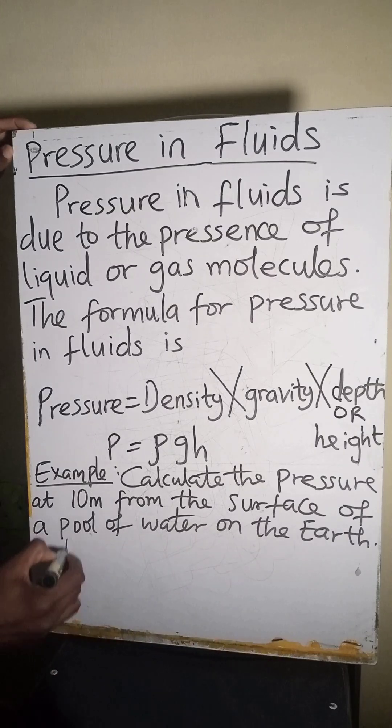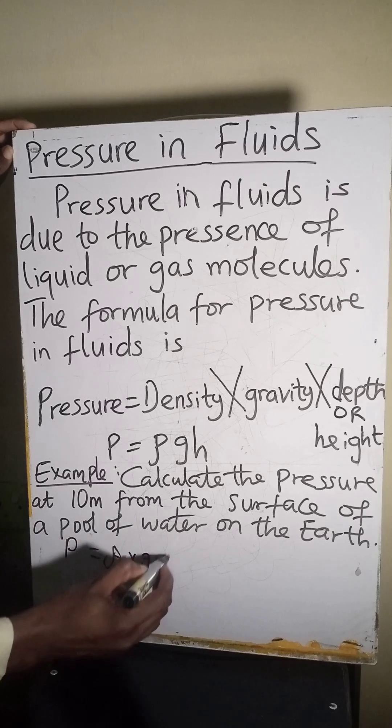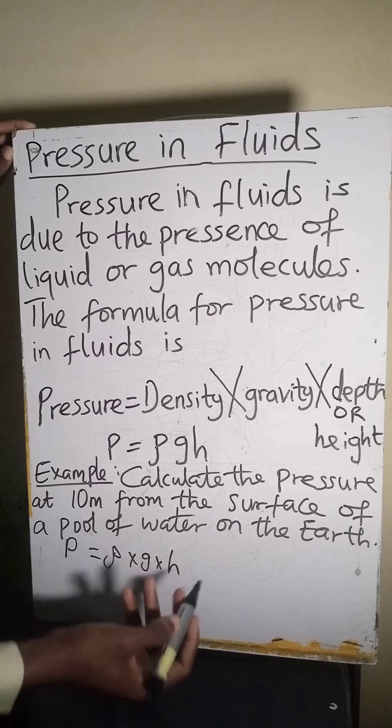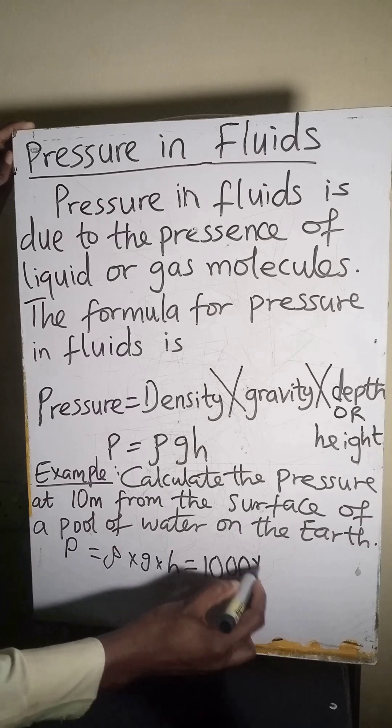What is the formula you are using? Pressure is equal to density times gravity times height, or you say depth. What is the density of water? The density of water is 1000 kilograms per meter cube.